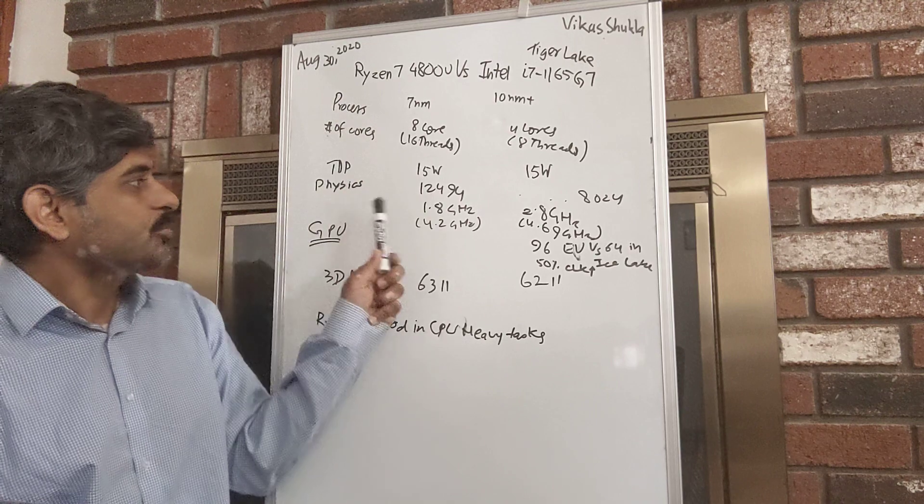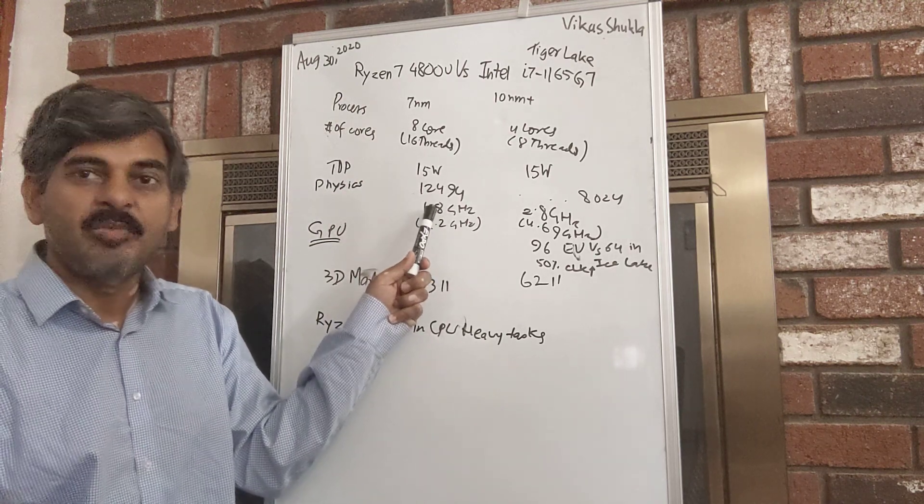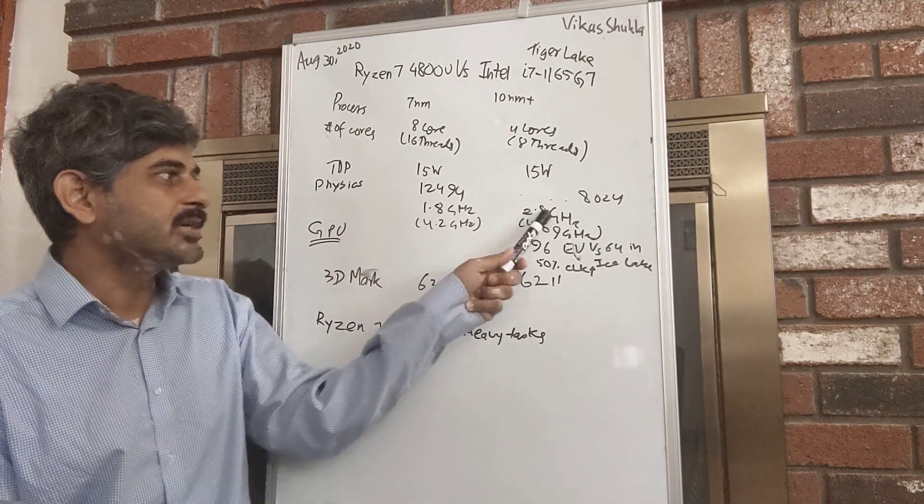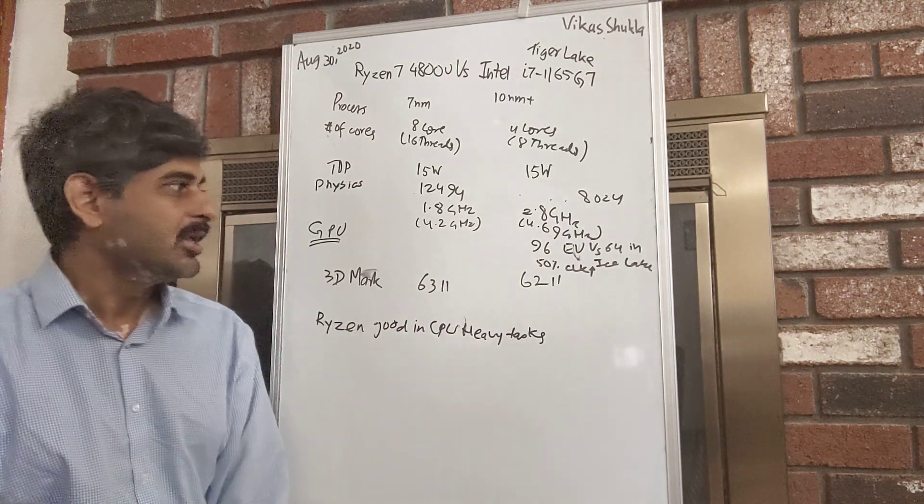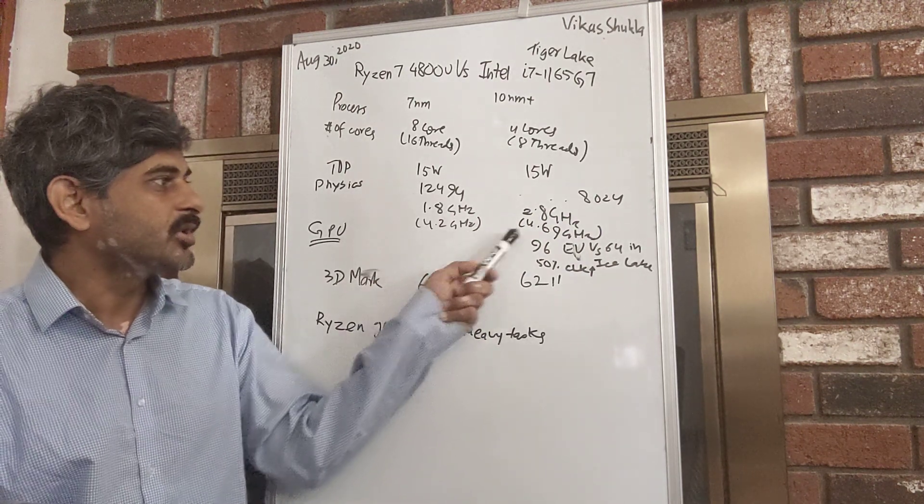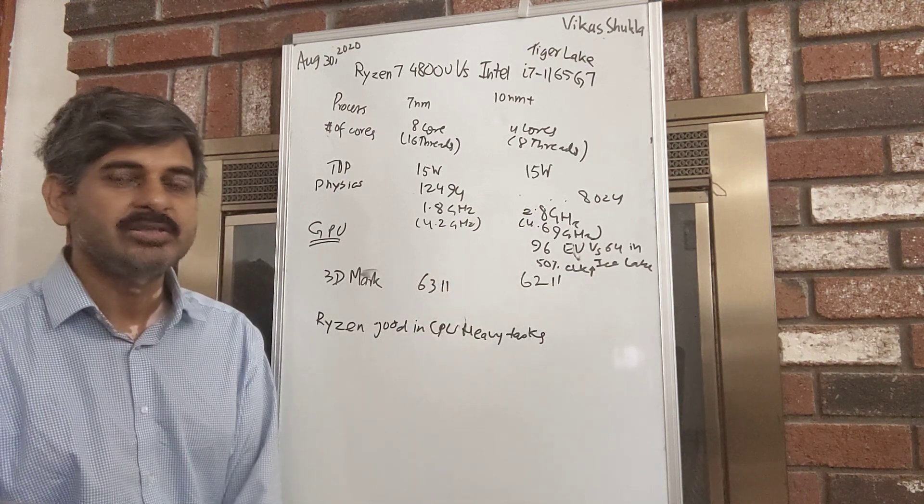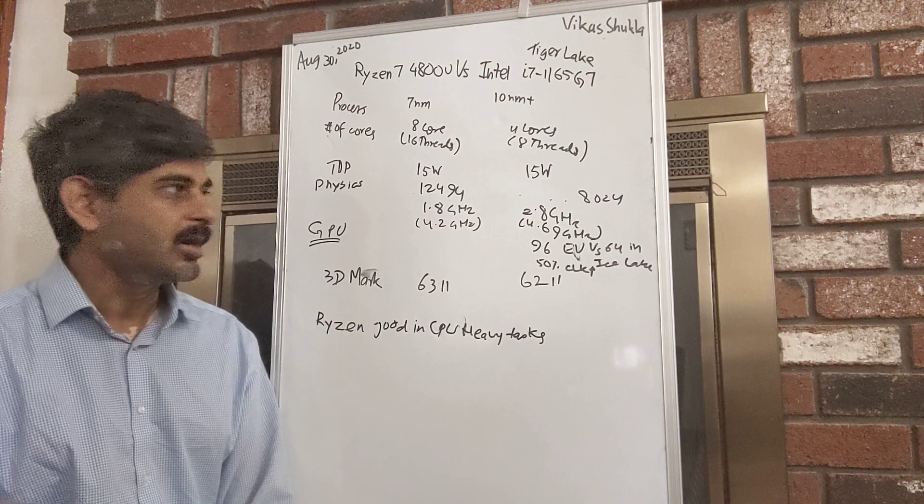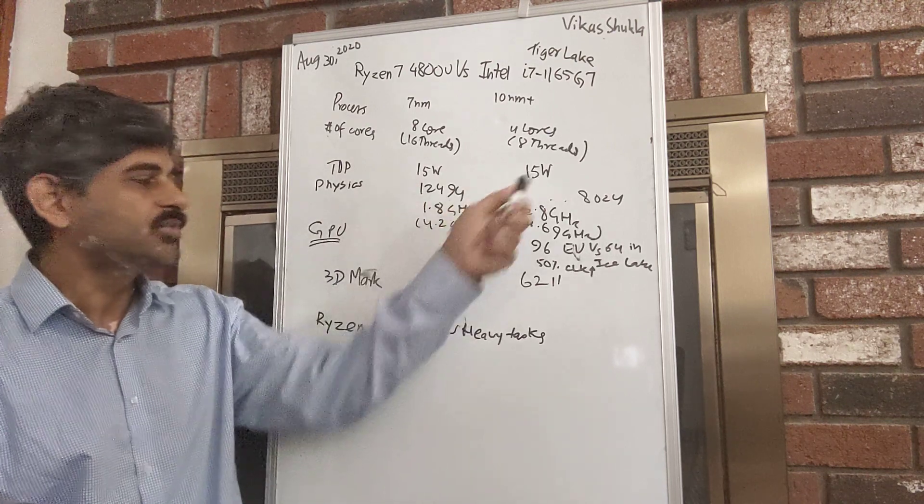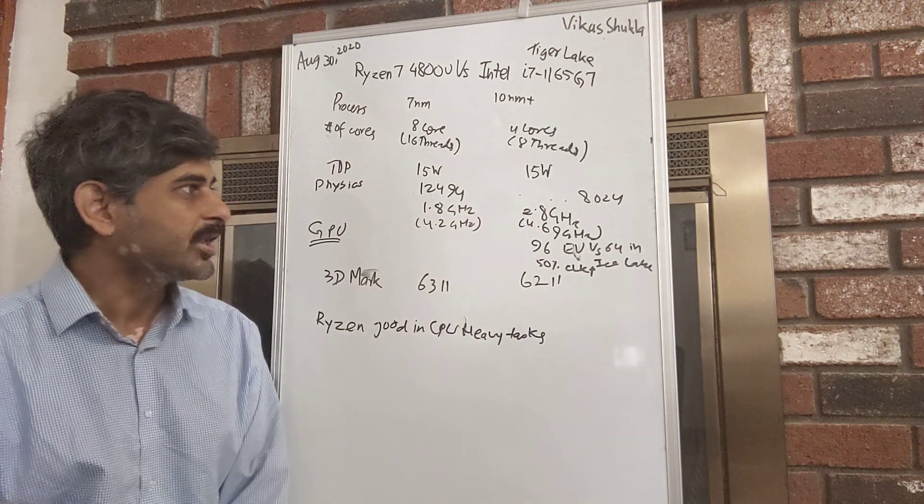Though AMD's processor is working at a lower nominal frequency of 1.8 gigahertz versus 2.8 gigahertz in Tiger Lake, it jumps to 4.2 gigahertz and 4.69 gigahertz when the load increases while still trying to maintain this 15 watt thermal envelope.